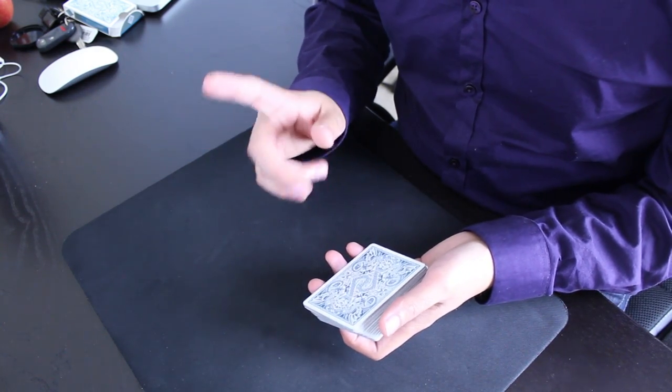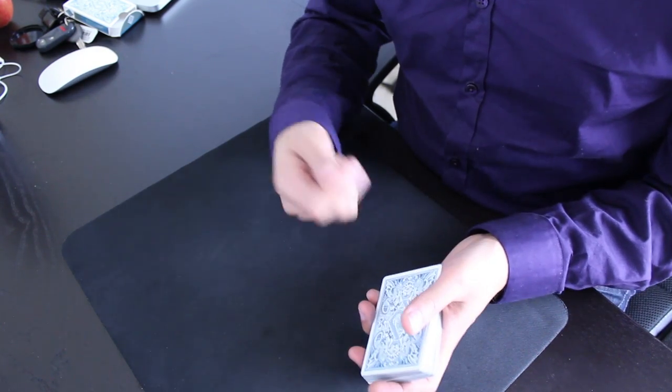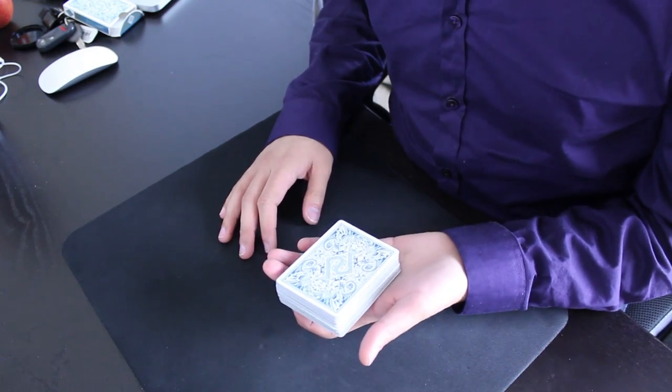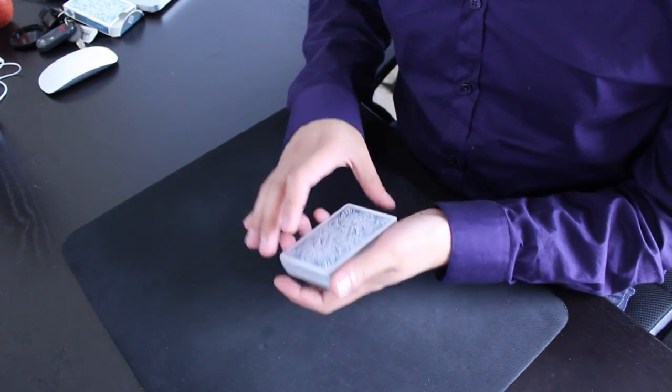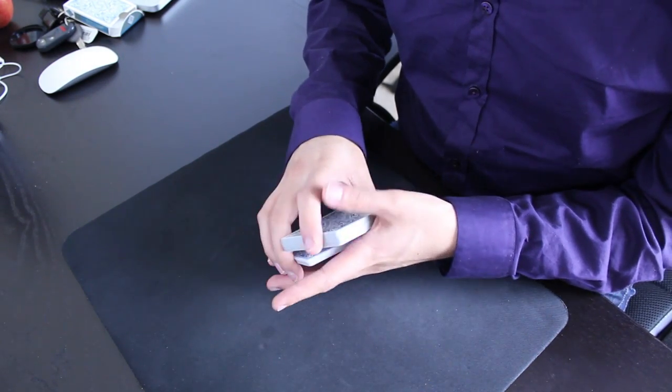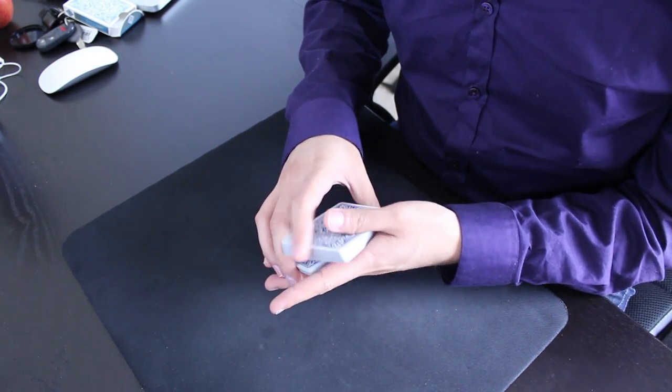Once you know those three things there's just one more thing that you need to learn and that's the actual flipping, the aerial part of the trick. So let's break it down a bit further. You start off by cutting about maybe two-thirds of the deck, swing cutting two-thirds of the deck into your left hand.